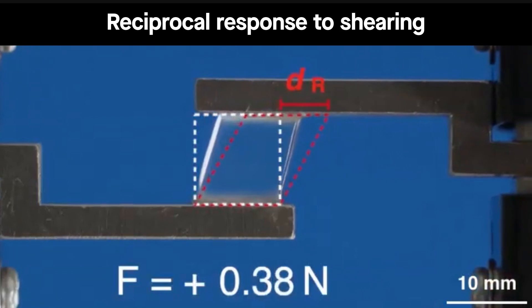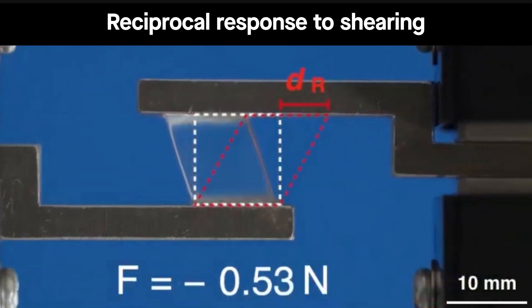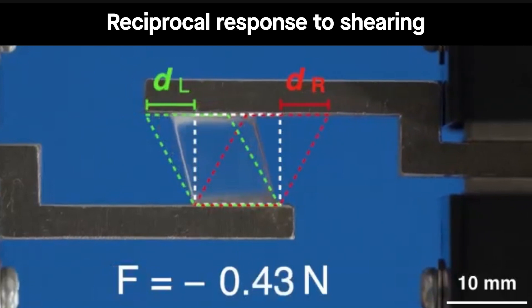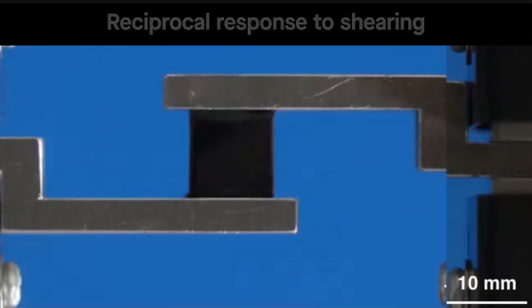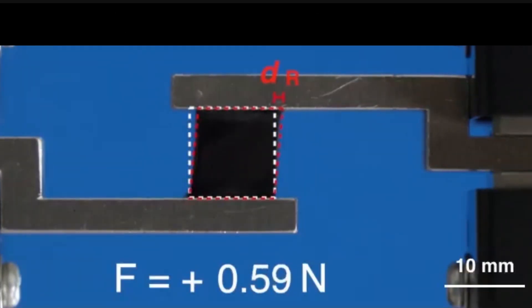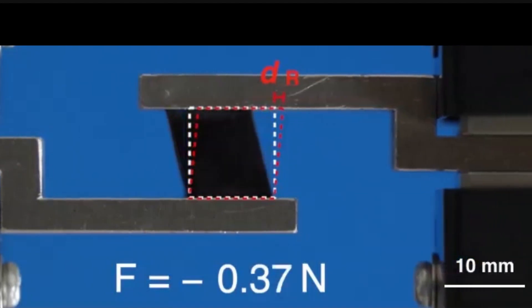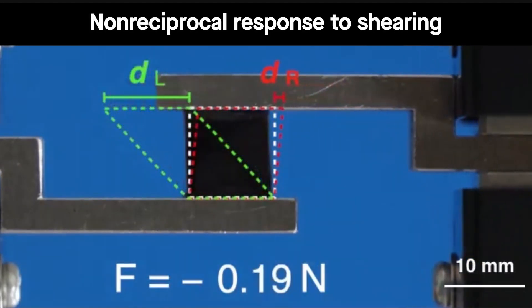Under a shear force, the block deforms to the same extent, regardless of whether it's sheared left to right or right to left. But scientists discovered that if you fill the hydrogel with billions of nano-sized sheets of carbon, you get a non-reciprocal material.